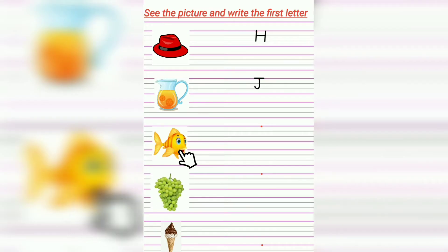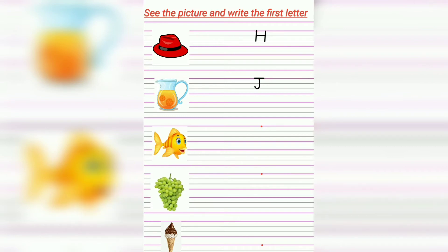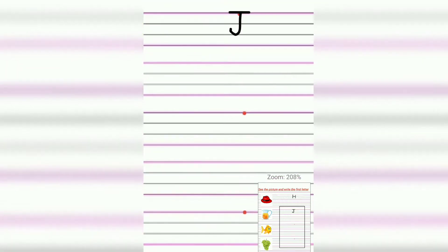This is fish. Fish starts with alphabet F. So write here alphabet F. Standing line, big slipping line, small slipping line.